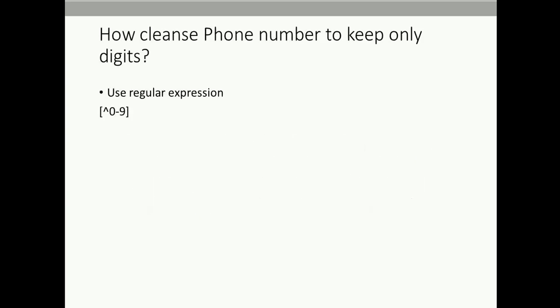First, we'll see how to cleanse a phone number to keep only digits. For example, if the phone number contains special characters such as hyphen, dot, or any alphabetic characters, we have to cleanse it and just get the digits out. To achieve that, we use the regular expression which looks like an open bracket, caret symbol, zero hyphen nine, and close bracket. Using this regular expression, we can replace any other characters with an empty string.